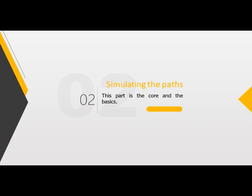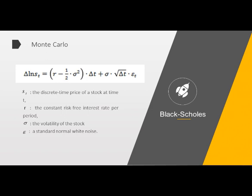The second part is the introduction of the mathematical method of simulating the path of exotic options with the help of MATLAB to carry out Monte Carlo results, which simulates the stochastic process. We first look at the Black-Scholes function, which gives us the logarithmic dynamic stock price related to the interest rate, the volatility of the stock, and white noise. Here, S_t represents the discrete time price of the stock at time t, r denotes the constant risk-free interest rate per period, sigma is the volatility of the stock, and epsilon represents a standard normal white noise. Now let's start to learn more specific calculation steps, including MATLAB programming.